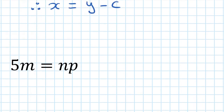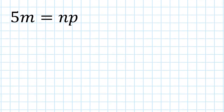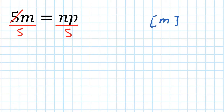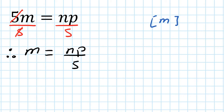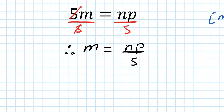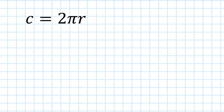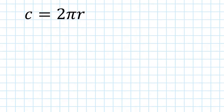Now let's make M the subject — in other words, solve for M. To solve for M, you get rid of the 5 by dividing by 5 on both sides. This 5 cancels out, so you're left with M equals np all over 5. It's exactly the same as solving an equation, except you cannot simplify. That's the only difference.